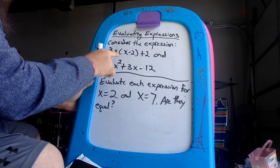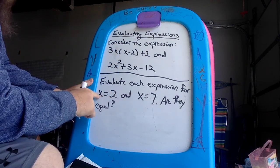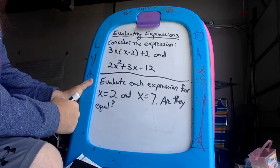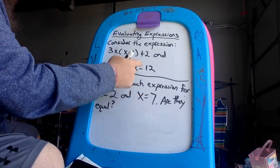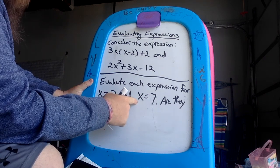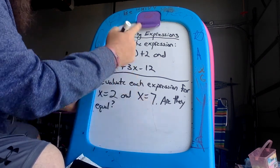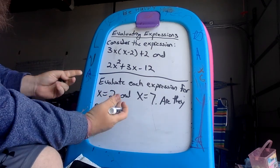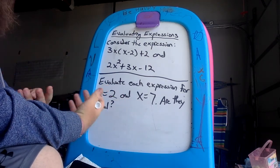So 3x, you're gonna write it, you're gonna substitute all the x's in both different equations with the unknown value which is 2, solve it and see if they're equal. Do the same thing with both equations and change the unknown value which is x into the number 7 and see if they're equal.